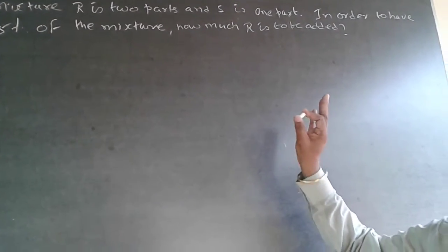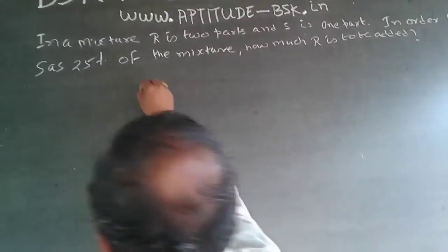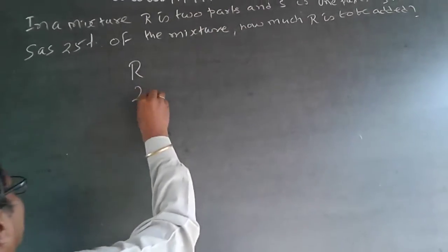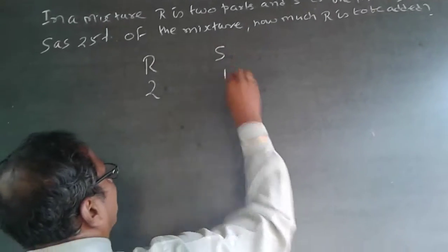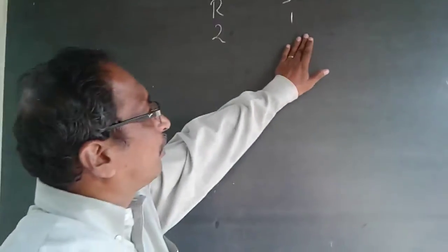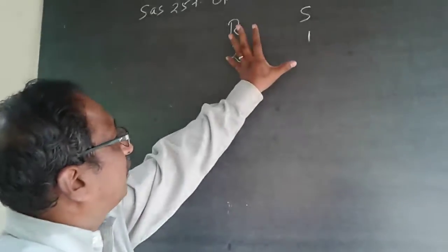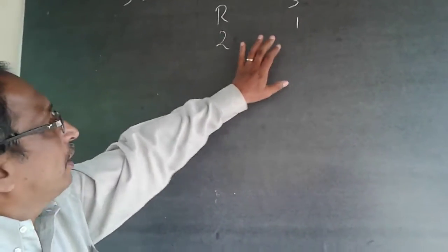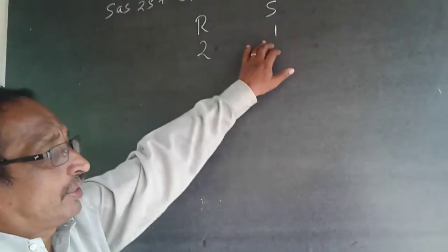So here, what is happening is R is 2 parts and S is 1 part. This is a mixture. So as of now, there are 3 parts, and R will be 2 thirds and S will be 1 third.